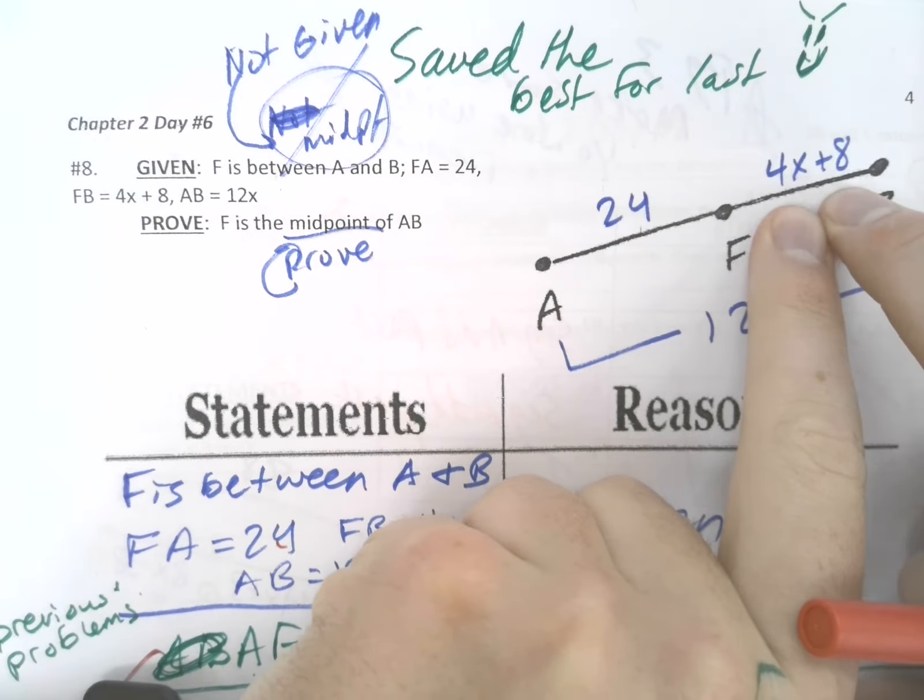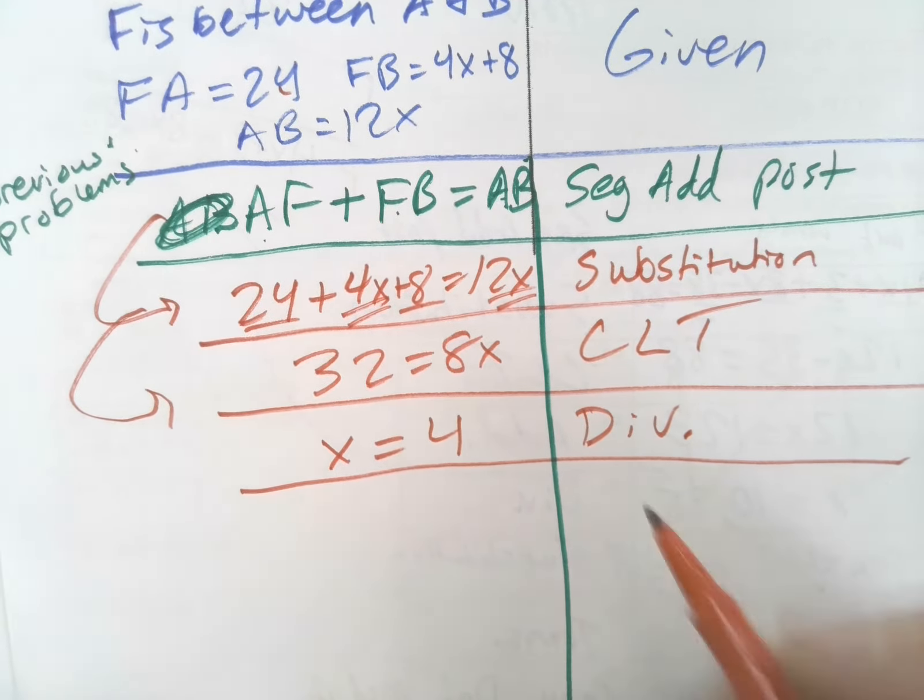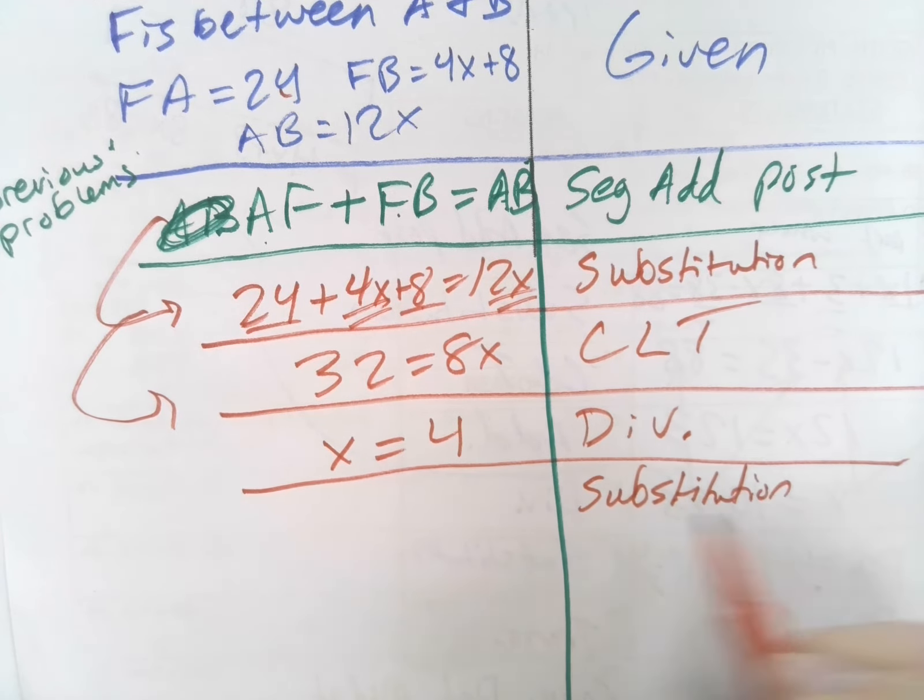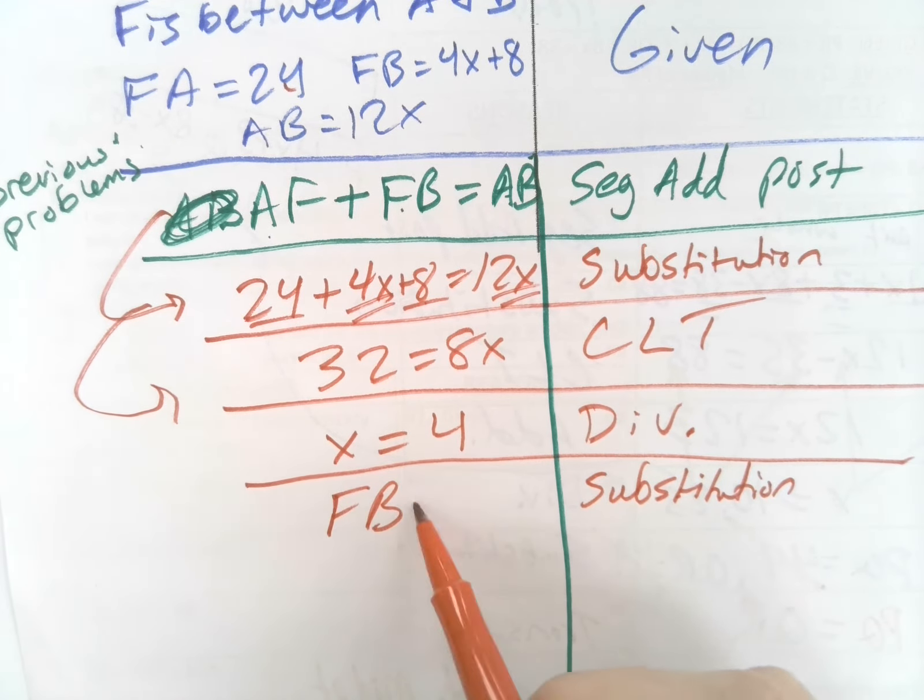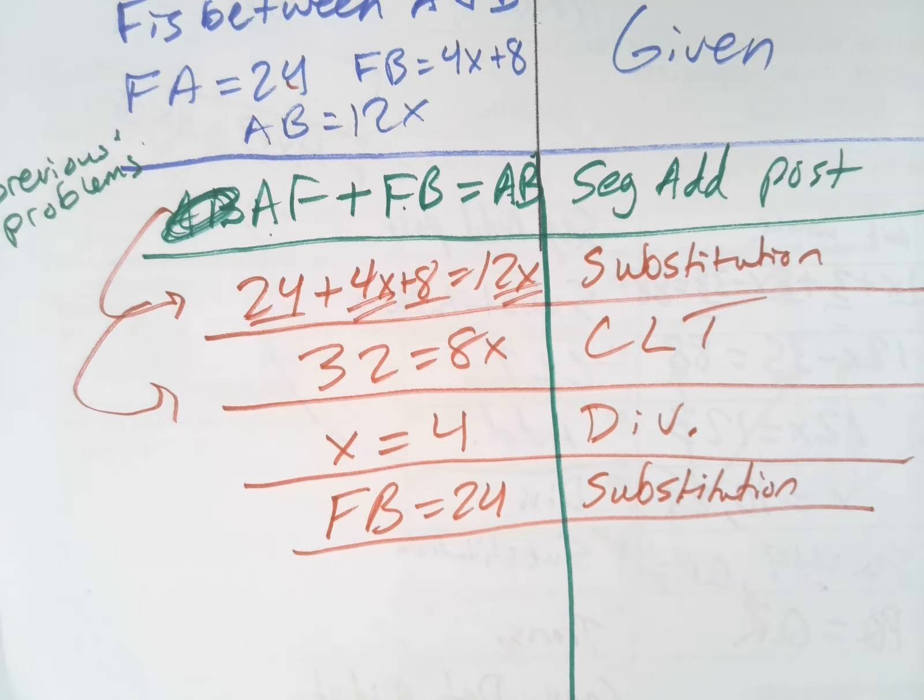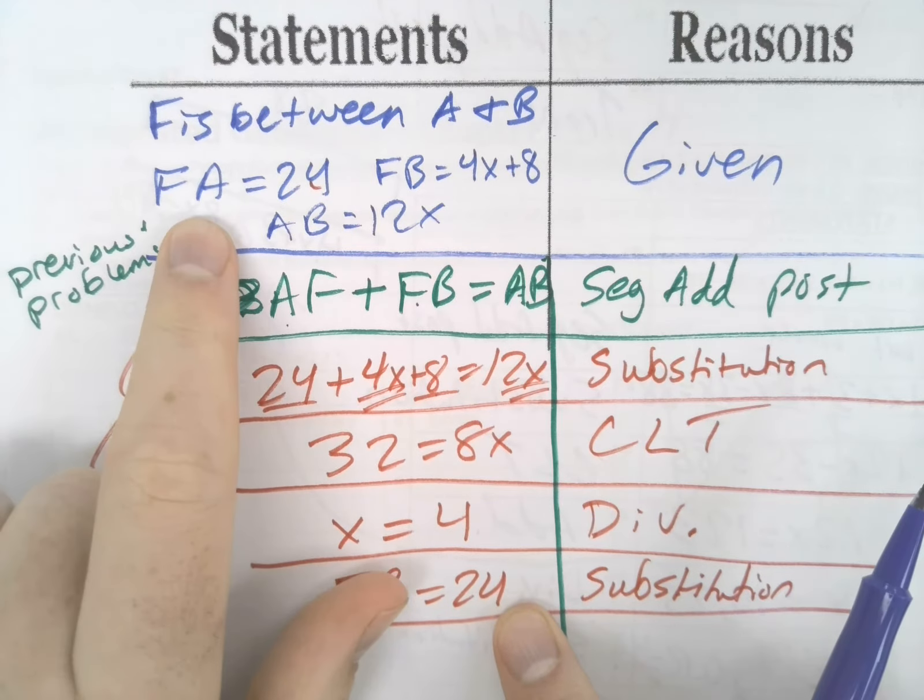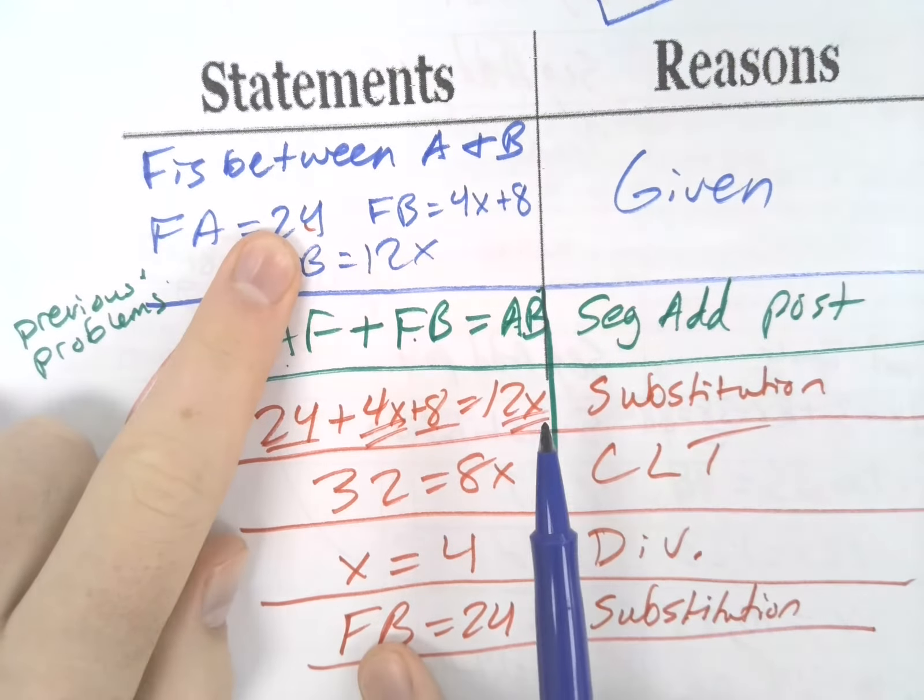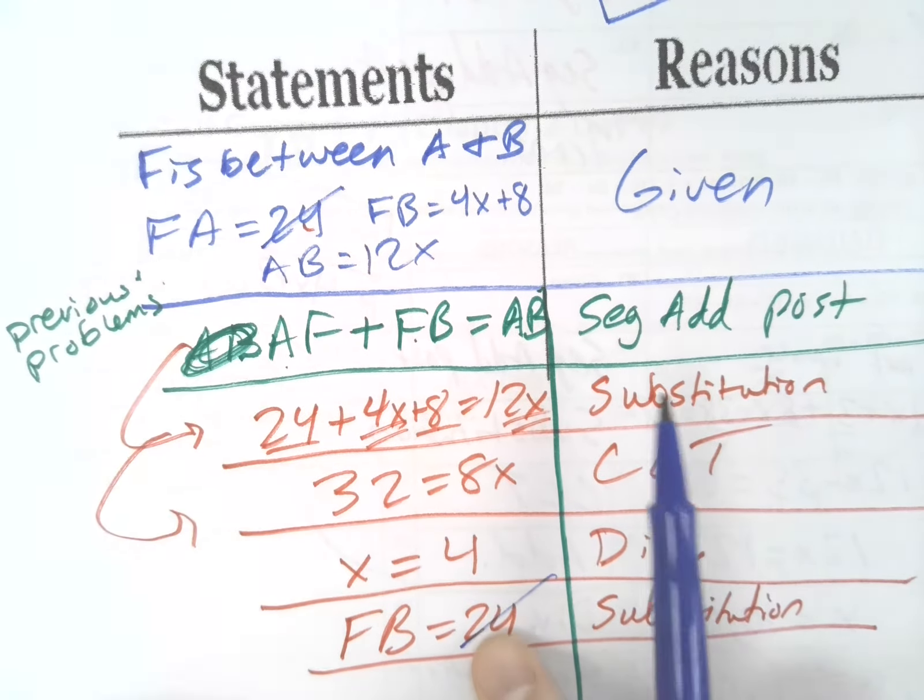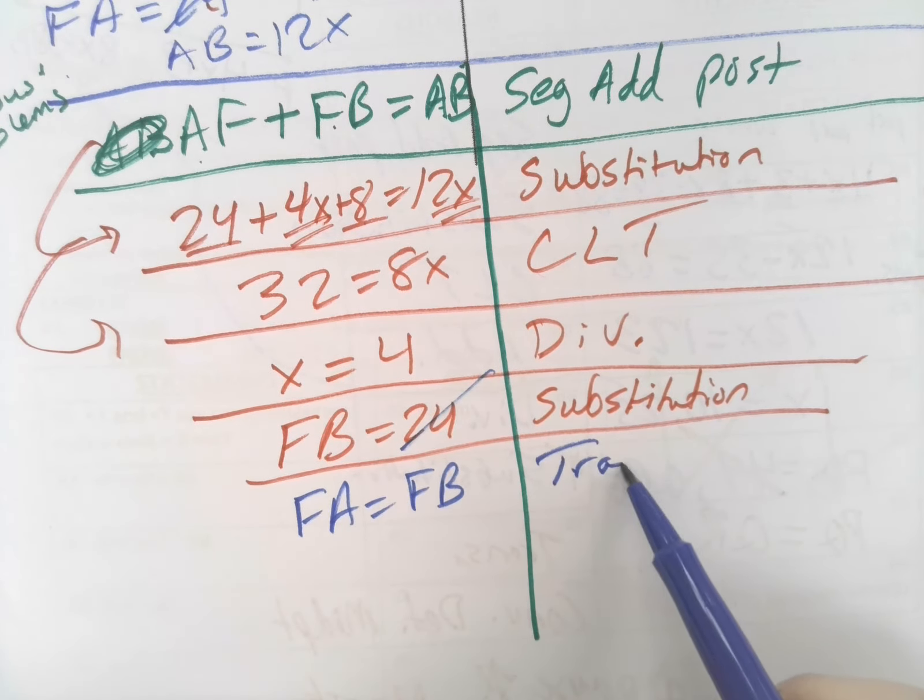So how are we going to prove that F is the midpoint? We need to prove that this piece is equal to this piece. If this is 24, how can we prove that FB is 24? We know what x is, we can use substitution. When you plug 4 in, 4 times 4 is 16 plus 8, we find out that FB is really 24. Now if FB is 24, what were we told at the beginning? FA is really 24 too. So we can say FA is really equal to FB, and what property lets us use that? The transitive property.